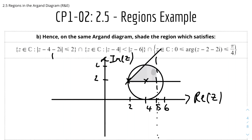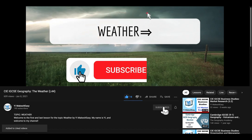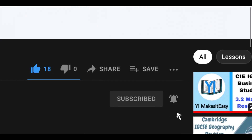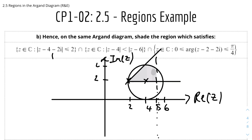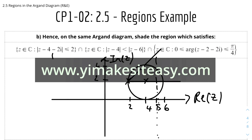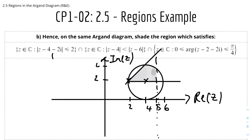And that's it for this video on 2.5 — regions in the Argand Diagram, rules and examples. I hope you found it useful and helpful. Please leave a like, subscribe, and hit the notification bell. If you have any questions, leave them below. Check out my social media and website at www.mreasy.com. The next video will be 2.5 regions in the Argand Diagram — the questions video, the last lesson for topic 2, after which we move on to topic 3: Series. Stay safe and happy learning.